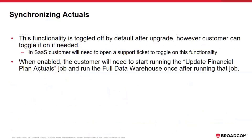By default, this change will be toggled off, meaning that as customers upgrade to 15.9.3, this new way of capturing actuals will not be enabled. Customers who want to test and validate the performance improvements can work with our support team to enable it. Once enabled, the customer will need to run the update financial plan actuals job and then run the full data warehouse job once after running that update.